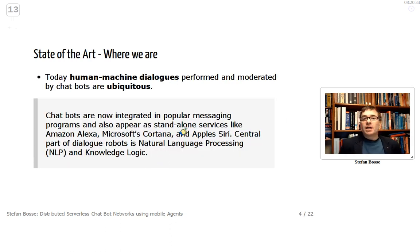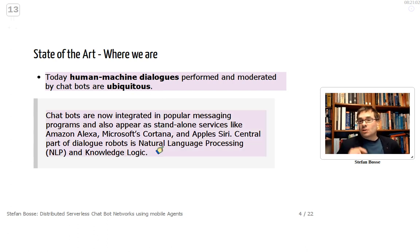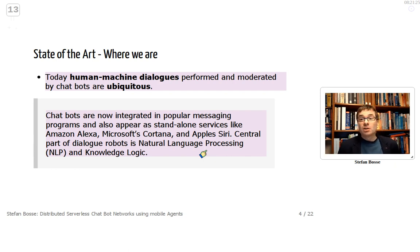What is the state of the art? Human-machine dialogues performed and moderated by chatbots are ubiquitous — found on many devices and places. Chatbots are now integrated in popular messaging programs and appear as standalone services like Amazon Alexa, Microsoft Cortana, and Apple's Siri. A central part of dialogue robots is natural language processing — NLP — and knowledge logic to represent the environmental state and world around a chatbot.